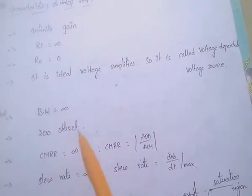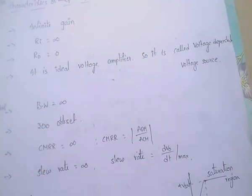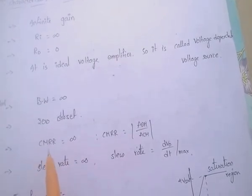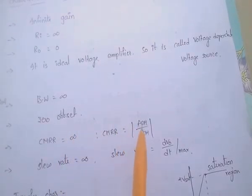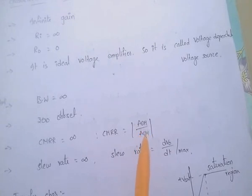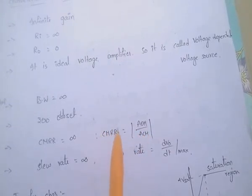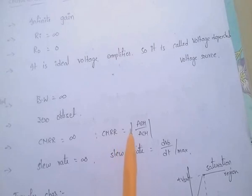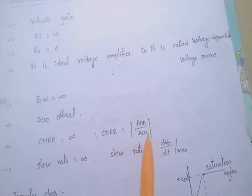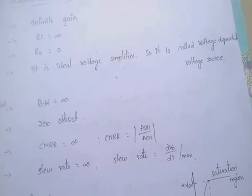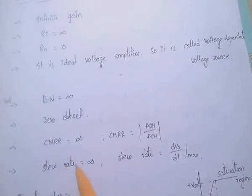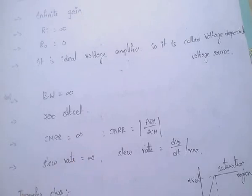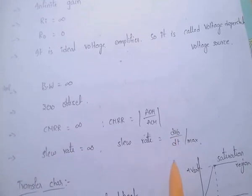It has zero offset. And CMRR — Common Mode Rejection Ratio — is infinite. CMRR equals mod ADM by ACM. It is the measure of sensitivity of differential amplifier to the common mode input, that is gain in the differential mode to the common mode. The slew rate of this op-amp is infinite. Slew rate is nothing but dV0/dt.